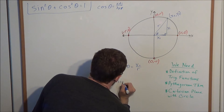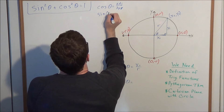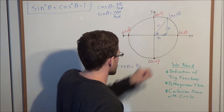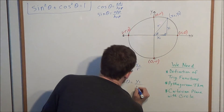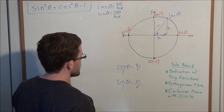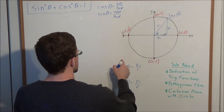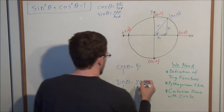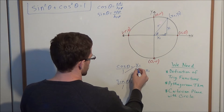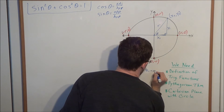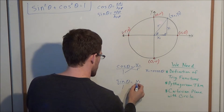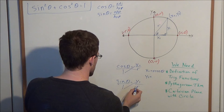We could also look at sine of theta. Sine theta is the ratio of the opposite side to the hypotenuse, so the side opposite theta is y₁ and the hypotenuse is still r, giving us y₁ over r. Writing these as cosine theta over 1 and sine theta over 1 allows us to cross multiply. So we get x₁ equals r cosine theta, and similarly y₁ equals r sine theta.